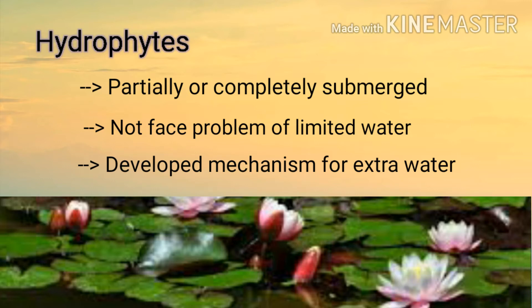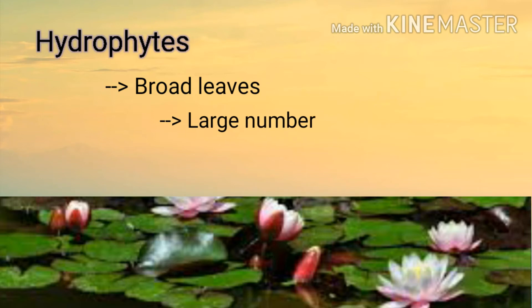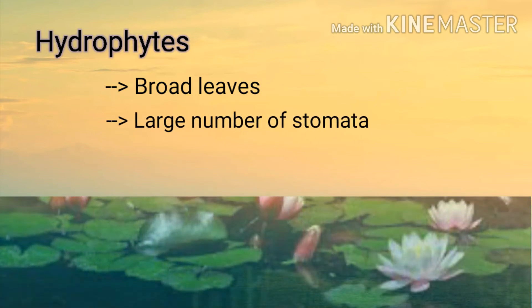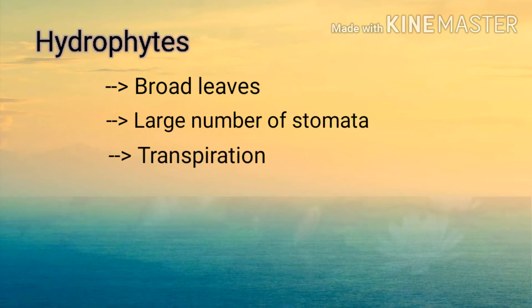Hydrophytes کے leaves broad ہوتے ہیں — مطلب بہت چوڑے ہوتے ہیں — اور ان broad leaves کے اوپر large number of stomata ہوتے ہیں۔ ان stomata سے extra water کو transpiration کے ذریعے remove کر دیا جاتا ہے۔